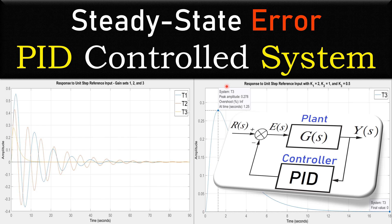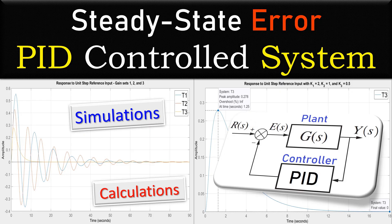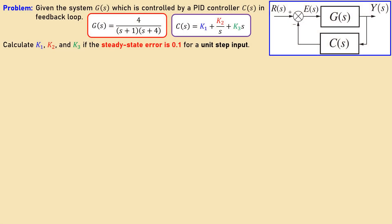Greetings and welcome to a new video about control system topics. We continue with the steady-state error examples. In this example I will look at the particular situation where we have a PID-controlled system where the PID controller is in the feedback path. We would like to know what kind of performance we can get in this configuration, specifically for the steady-state error. We'll do the calculations step by step and also check using simulations in MATLAB.